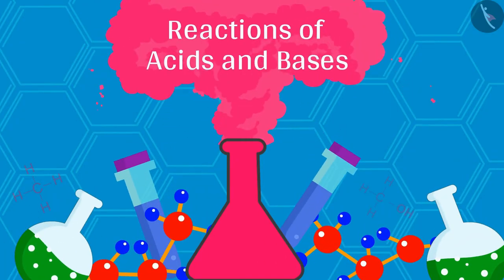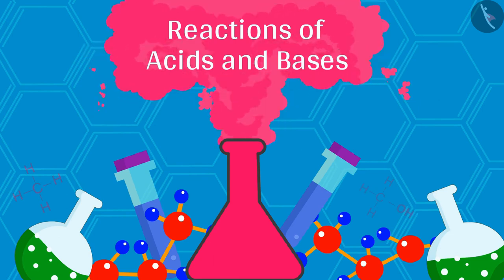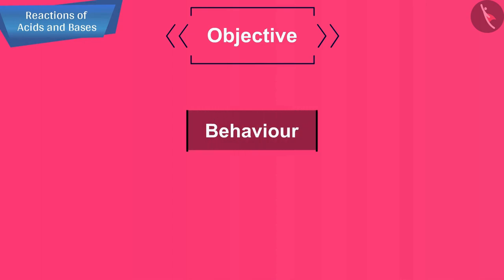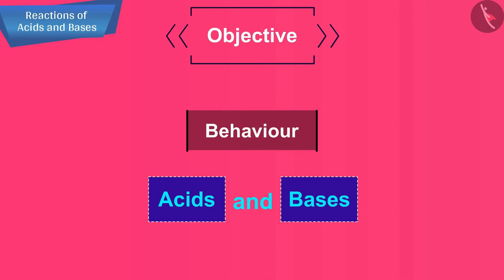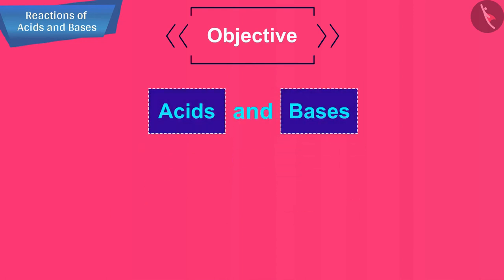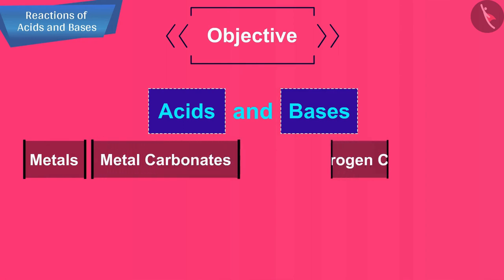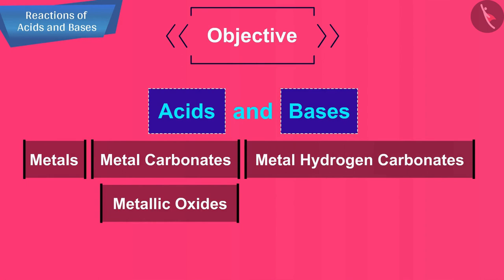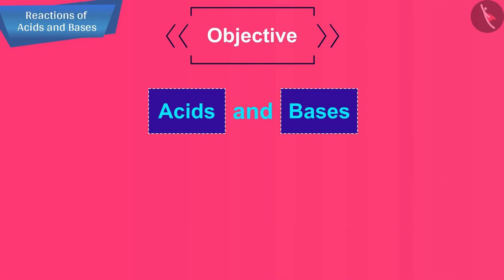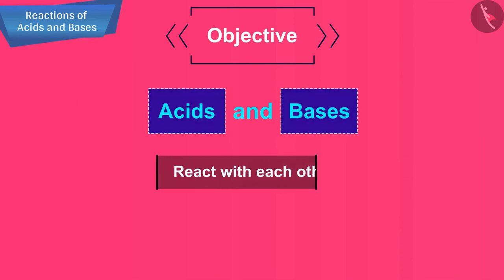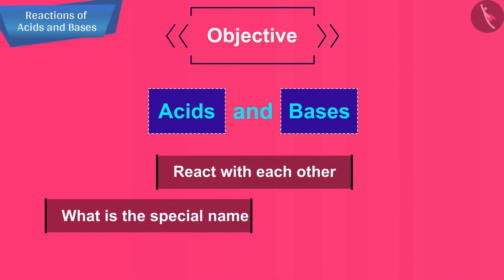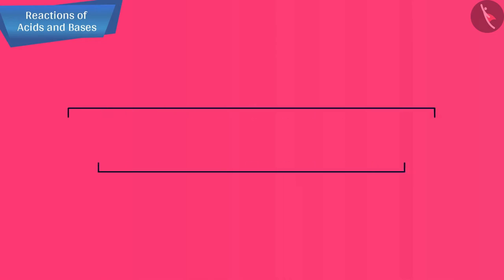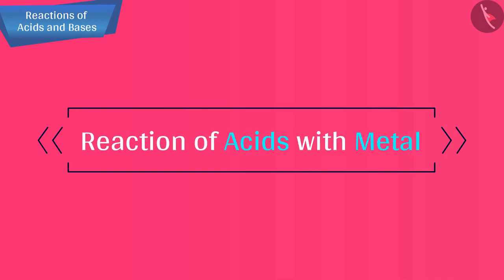Hello friends, welcome to this video session. The topic we are going to cover is reactions of acids and bases. In this video lesson, we will understand the behavior of acids and bases in a better way, and understand how acids and bases react with metals, metal carbonates, metal hydrogen carbonates, metallic oxides, and non-metallic oxides. We will also learn how acids and bases react with each other and the special name given to such a reaction.